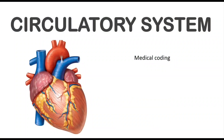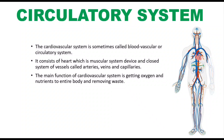Today we are going to discuss the circulatory system, which is useful for freshers trying for medical coding jobs, not for CPC candidates. The circulatory system is also called the cardiovascular system or blood vascular system. It consists of the heart, which is a muscular device, and a closed system of vessels called arteries, veins, and capillaries. The main function of the cardiovascular system is getting oxygen and nutrients to the entire body and removing waste.